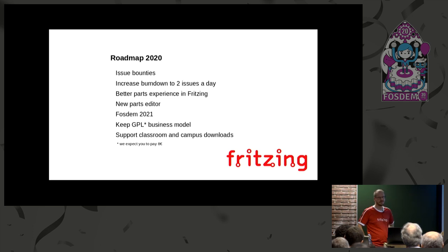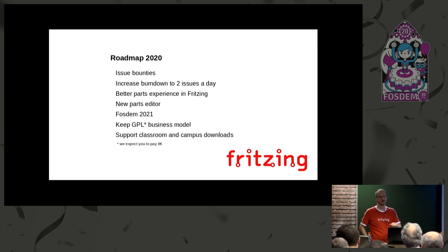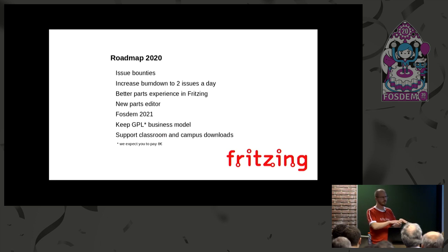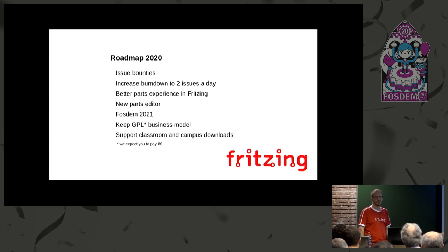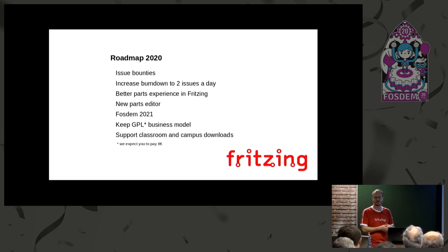We're trying to keep the GPL business model. For now it's a problem for schools when they want to download Fritzing and see 8 euros per download — it just doesn't work for a classroom. Of course, when they write me an email I just send them the link, and if you register on the website that's also a way around the 8 euro payment. We also want to support campus and classroom downloads — campuses want network installs for Windows and similar things, which most open source developers doing this in free time don't care about, but a university might develop it.